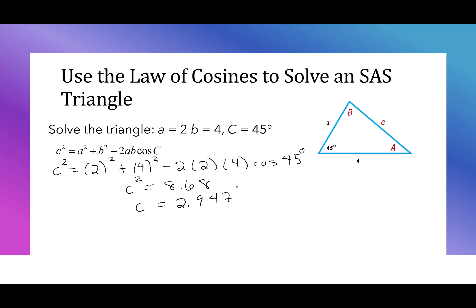You should watch for instructions in your homework or other assignments that tell you how many decimal places to use when giving your answers. At this point I know all three sides of my triangle, but I only know one of the angles. I need to find the remaining two. We could continue to use the law of cosines, or we could bring back the law of sines. I'll use the law of sines because I think it's a little bit easier. To use the law of sines, I need to take an angle I know and a corresponding side — we'll say the sine of 45 over 2.947 is equal to...